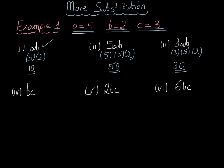Now let's work out bc. BC would be 2 brackets 3, and 2 times 3 is equal to 6.